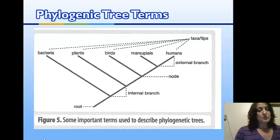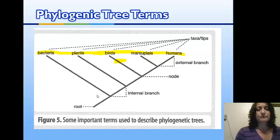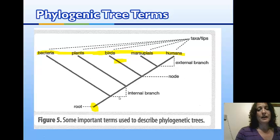Some terms we'll be using: the tips of the branches we call either the tips or the taxa — taxa means names. Sometimes a name will be positioned lower, which generally indicates that species has gone extinct. At the bottom we have the root of the tree, which represents our ancestral species. Each of these branch points are called nodes. As we move in one direction, we're going more recent in time; going back is going back in evolutionary history.